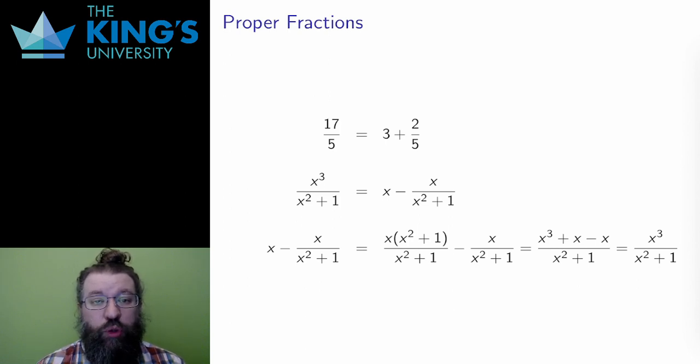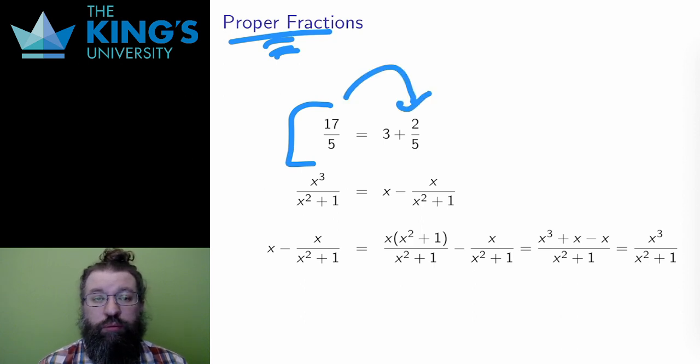You may recall from your grade school mathematics the idea of a proper fraction. For numbers, a fraction is proper if the numerator is smaller than the denominator. If a fraction is not proper, such as 17 fifths, then there is always a way to make it proper by pulling out a whole number. 17 fifths is the same thing as 3 plus 2 fifths, and 2 fifths is a proper fraction.